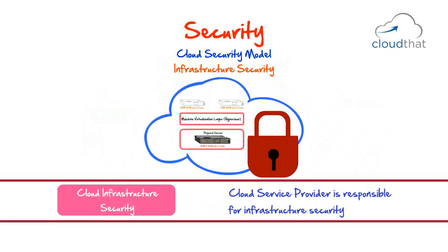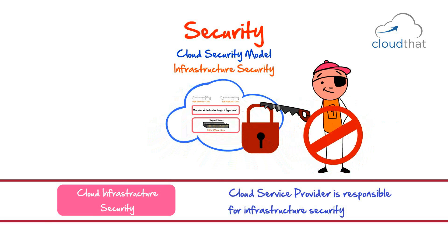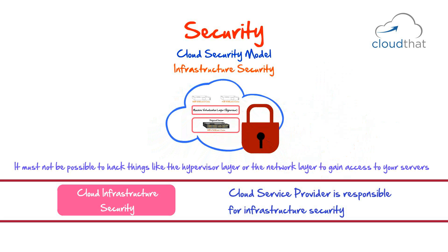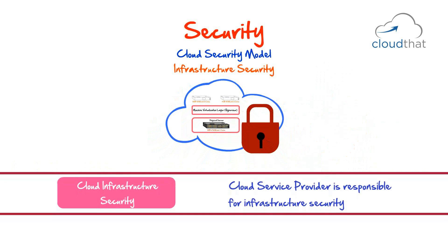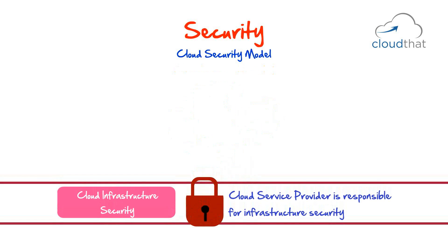Infrastructure security: the entire infrastructure on which cloud services are based must be secure, and this is the cloud provider's job. They must ensure that things like the hypervisor layer or the network layer cannot be hacked to gain access to your servers. So the bottom layer of security has to be secured by the cloud service provider.